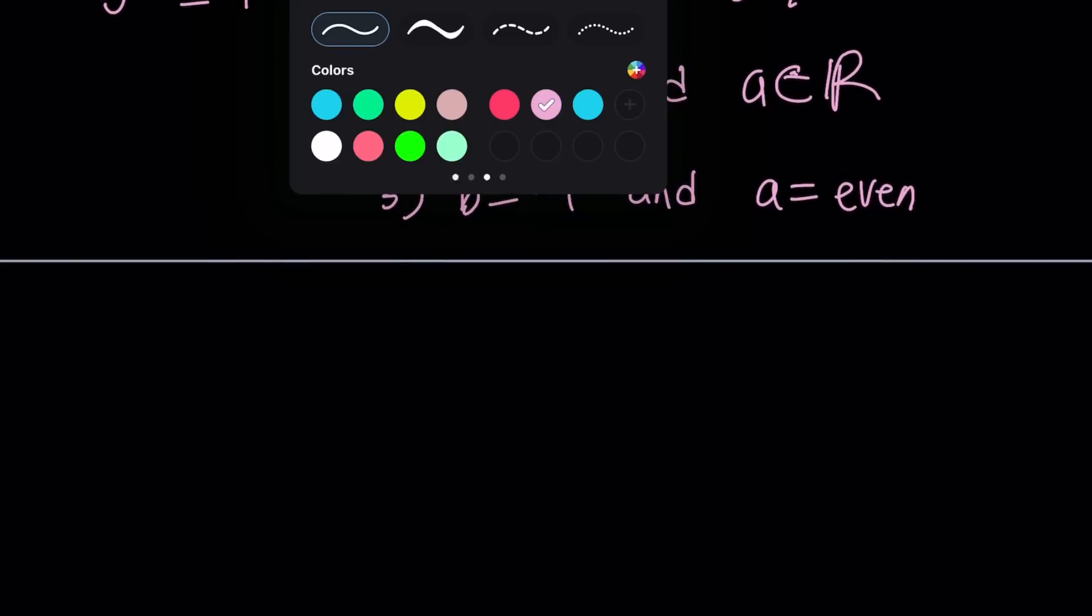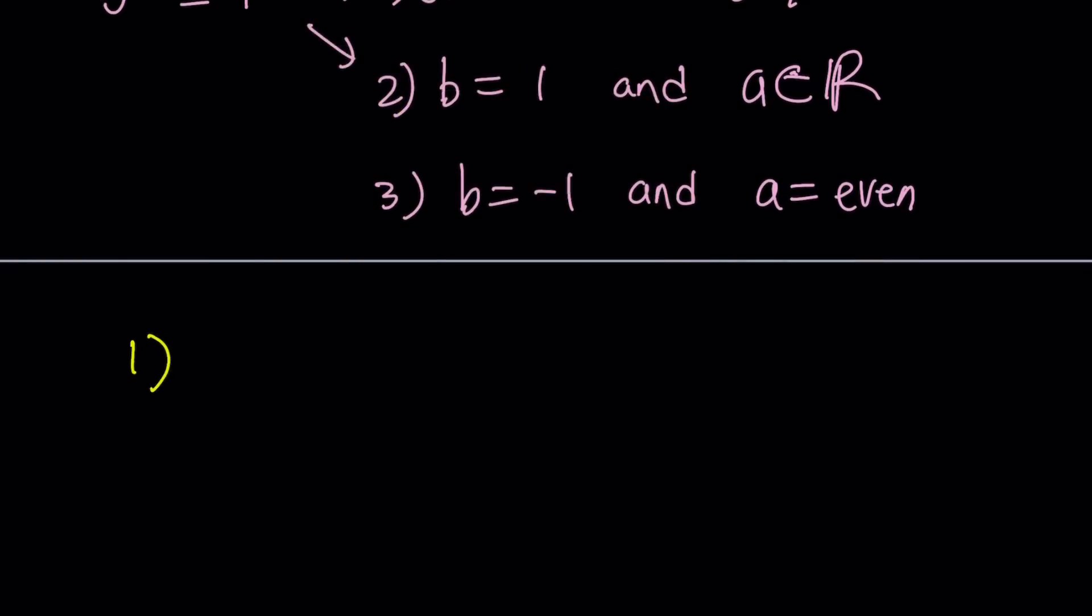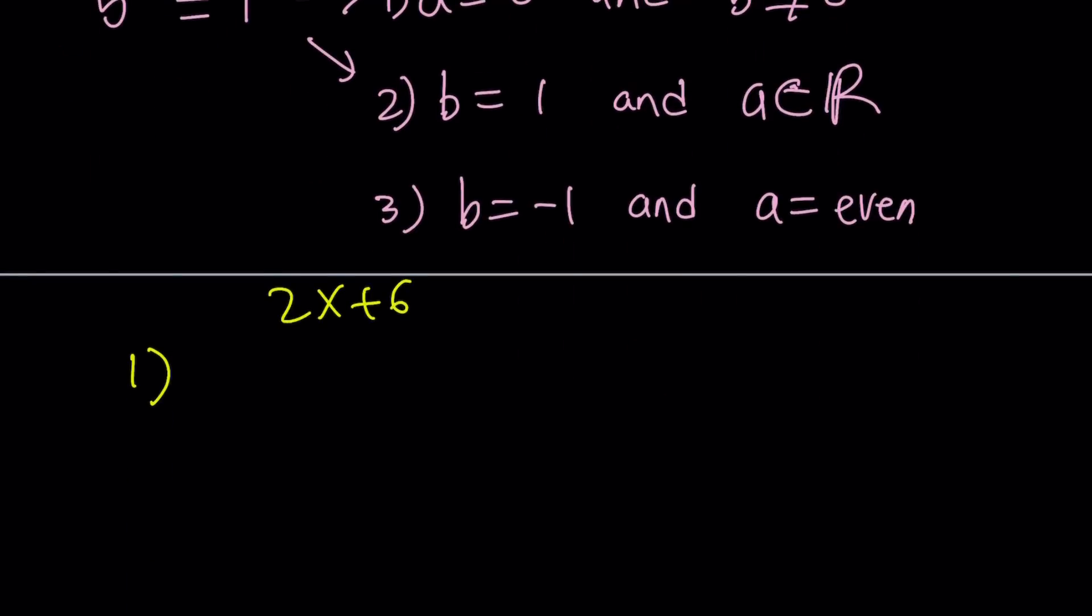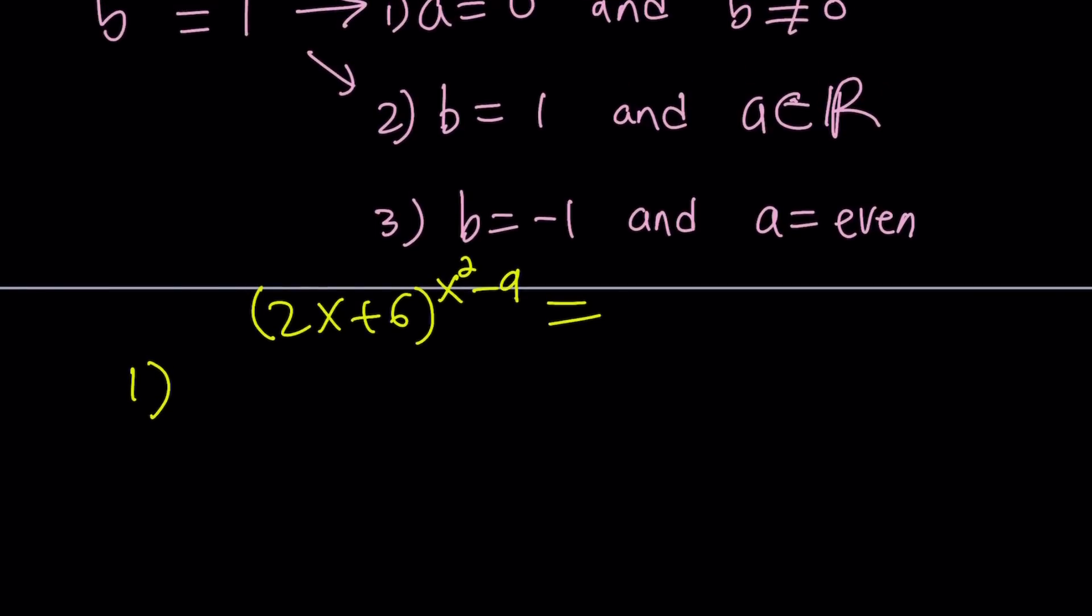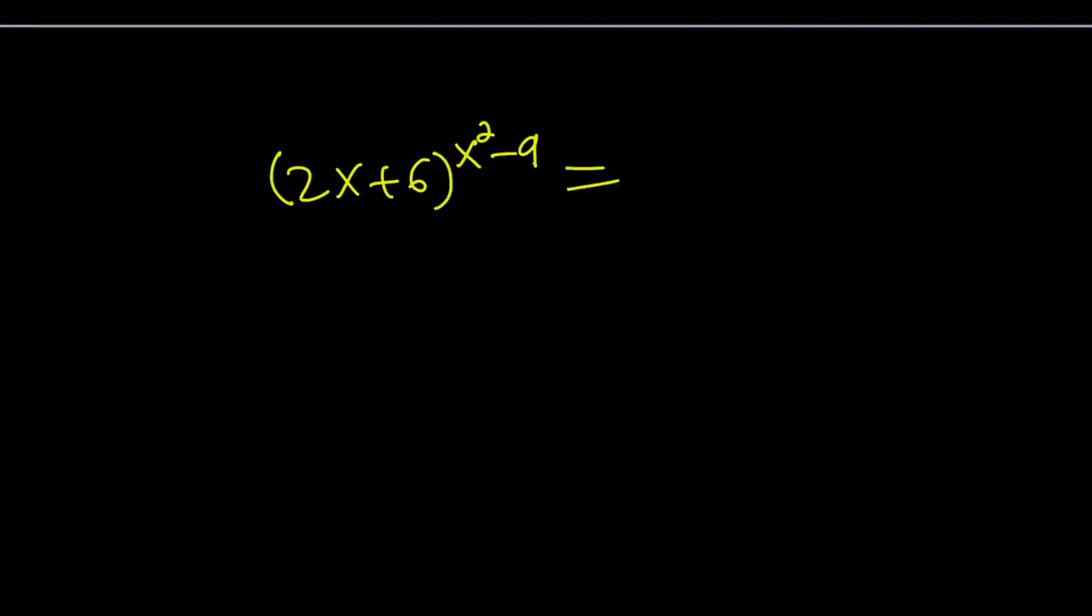So the first case gives us a equals 0. So what is my a? a is the exponent. So let's write our equation one more time so we can get that visibility. 2x plus 6 to the power x squared minus 9 equals 1. Let's go ahead and move this over. Let's erase this and start over. So this is my equation.